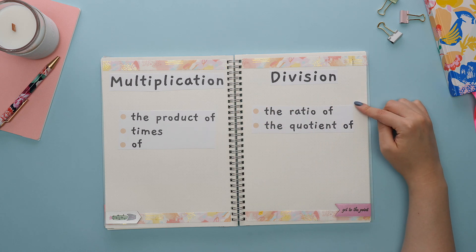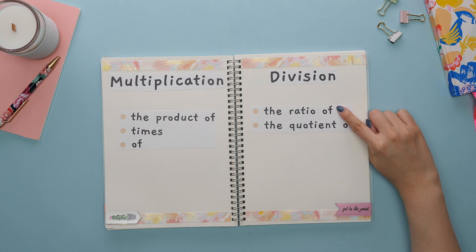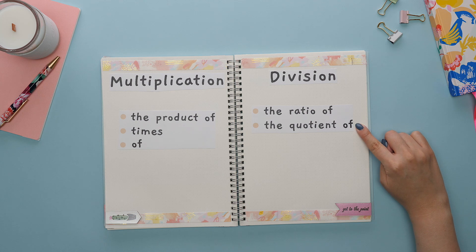As for division, some keywords and phrases include the ratio of, or the quotient of.